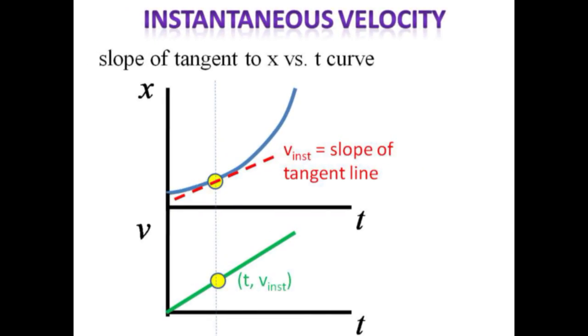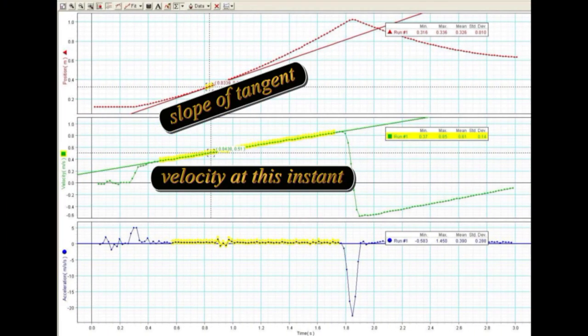With constant acceleration, the position versus time graph is constantly curving as the velocity increases. The instantaneous velocity is just the slope of the tangent to the curve at any instant of time. Experimentally, we can compare the slope of the tangent line at some moment of time with the corresponding value of velocity at the same time in the velocity versus time straight line graph below. In the topmost graph of position versus time, highlight three adjacent points and perform a linear fit to approximate the tangent at that moment of time. Drop to the middle graph of velocity versus time and use the xy tool to measure the velocity at the same time, and compare the slope of the tangent to the instantaneous value of velocity.